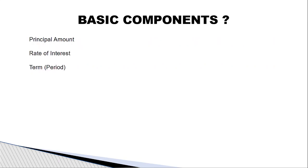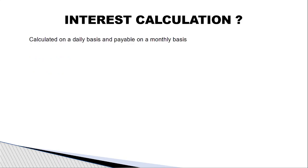The basic components involved in a line of credit are: total loan amount, principal amount, rate of interest, period, and other terms and conditions such as processing fee and other features. Interest is calculated daily on the utilized amount and collected from the customer on a monthly basis.